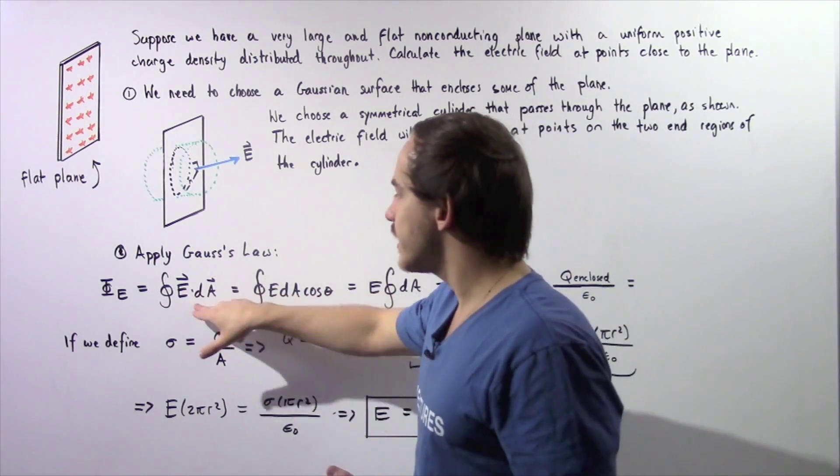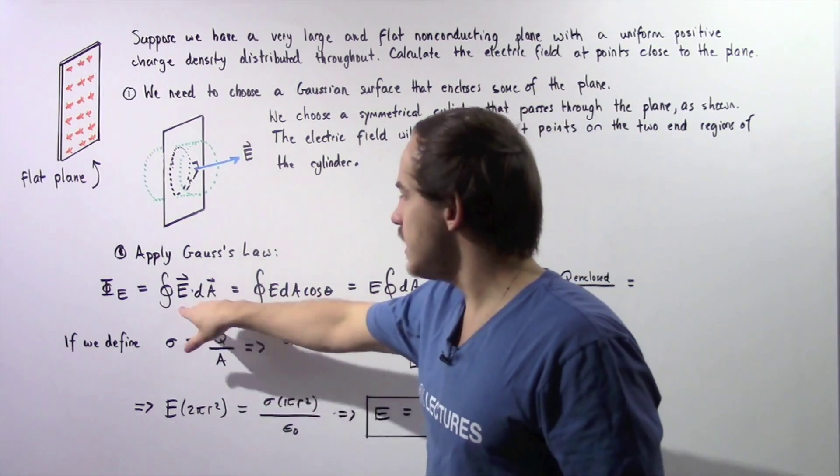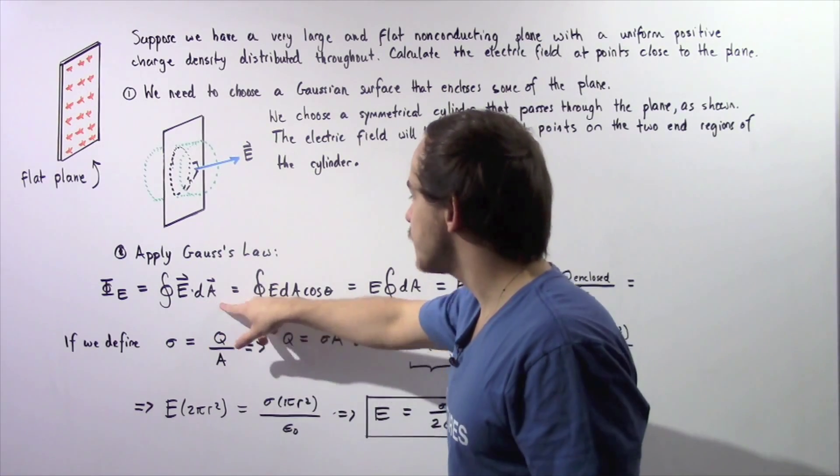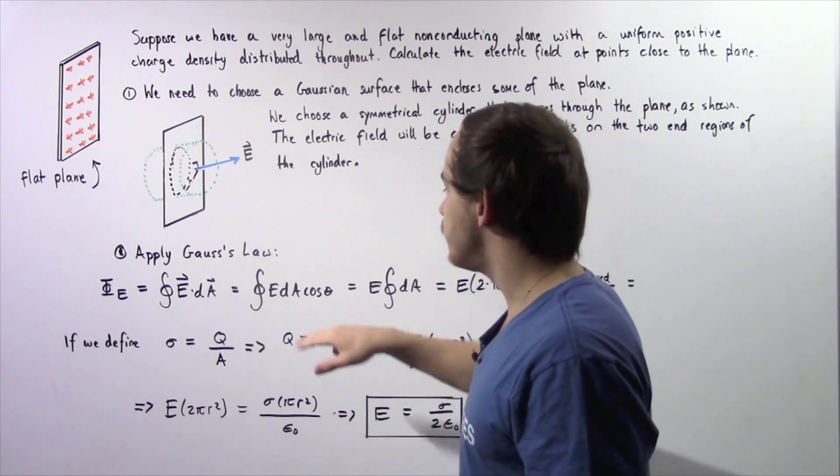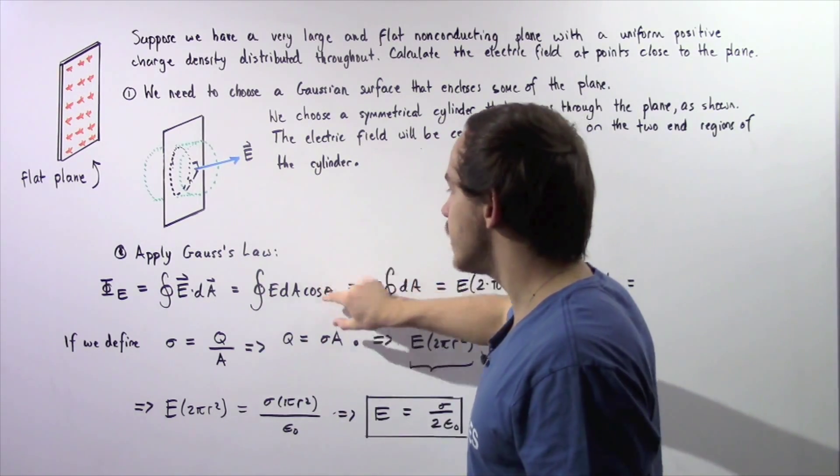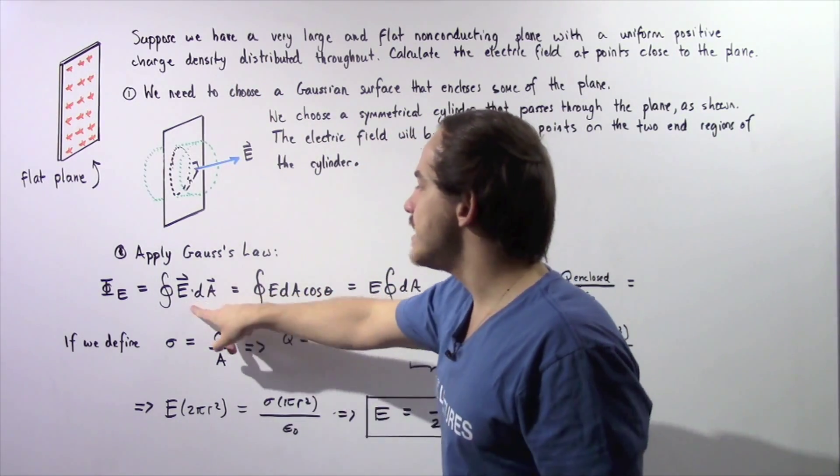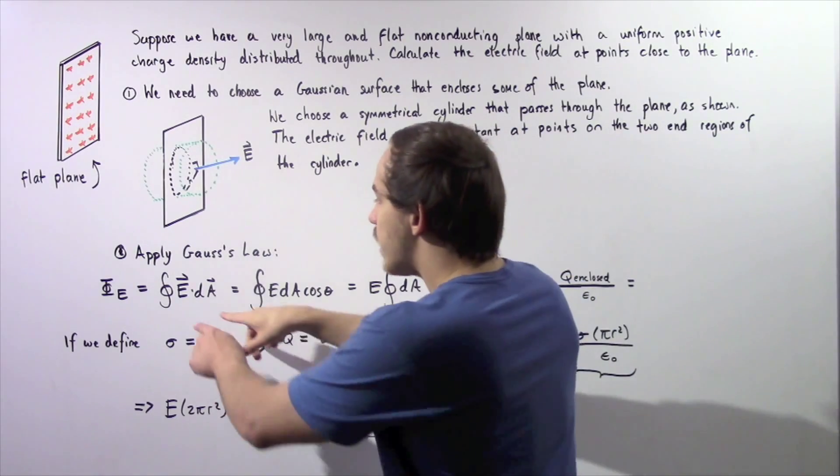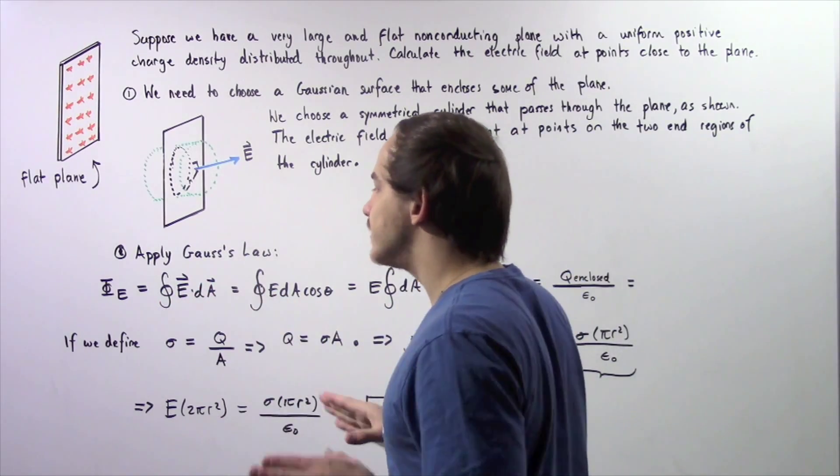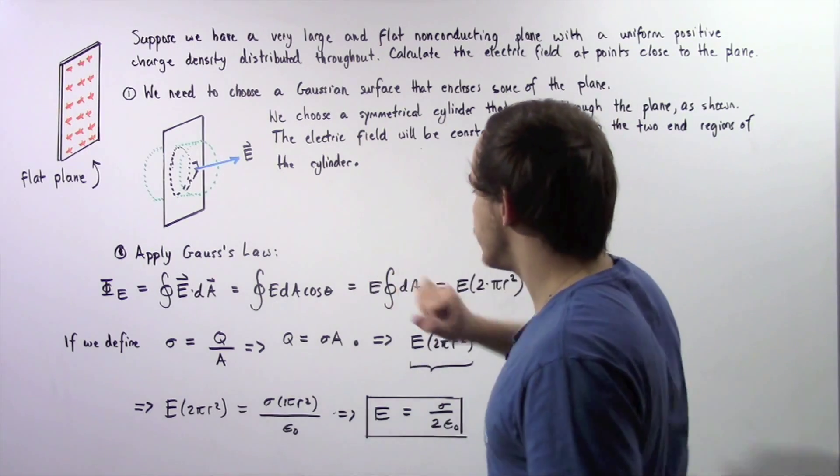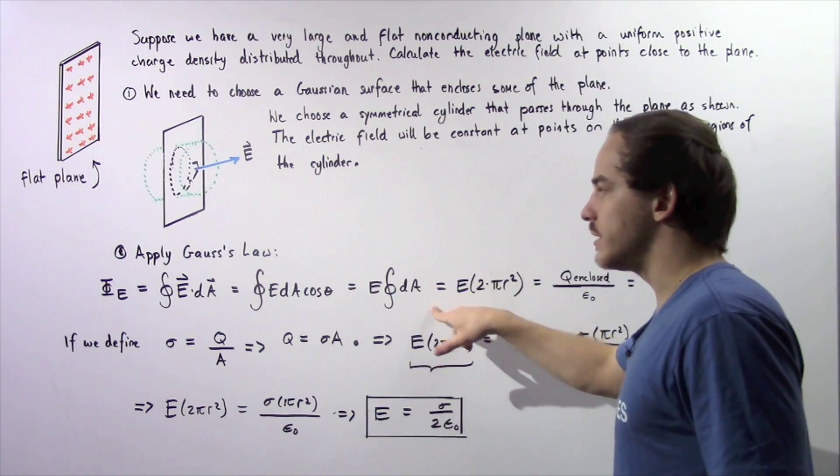By definition, dot product is equal to the magnitude of E multiplied by the magnitude of dA multiplied by cosine of the angle theta, which is the angle between our electric field vector and our dA vector. These point in the same exact direction, so the angle is zero and cosine of zero becomes one.